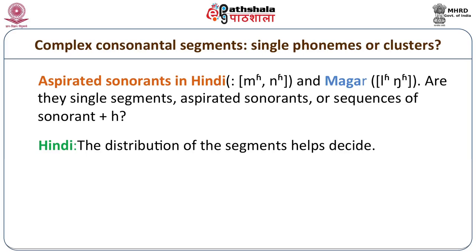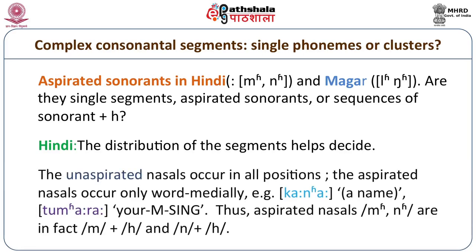When it comes to the nasals, it is not very certain whether we should treat the aspirated nasals—and also the aspirated lateral—as a single phoneme or a complex of two phonemes. The evidence that can be brought to bear here is the distribution. Whereas all the aspirated plosives occur in medial, final, and initial positions, the aspirated nasals and lateral occur only in the medial position.